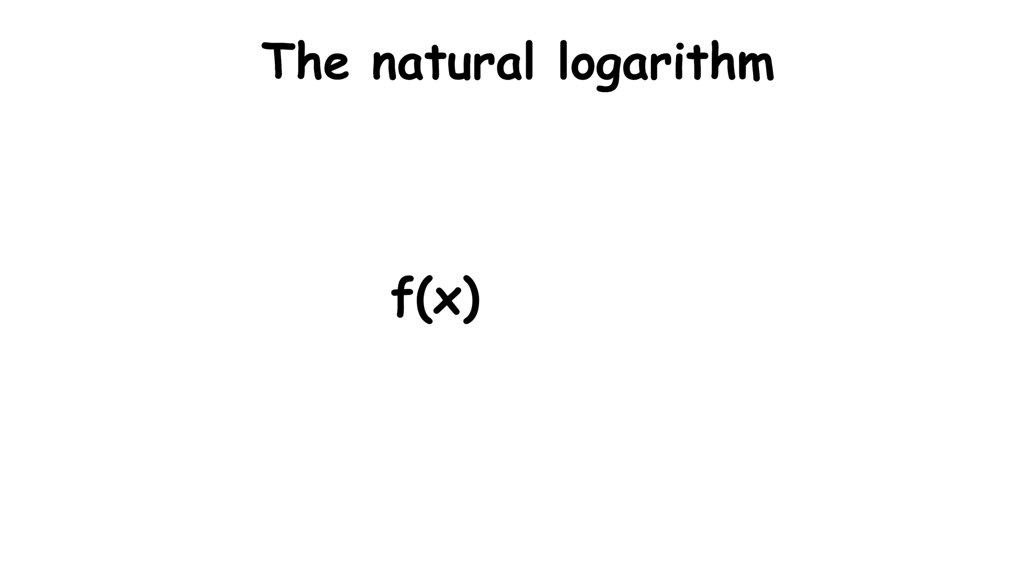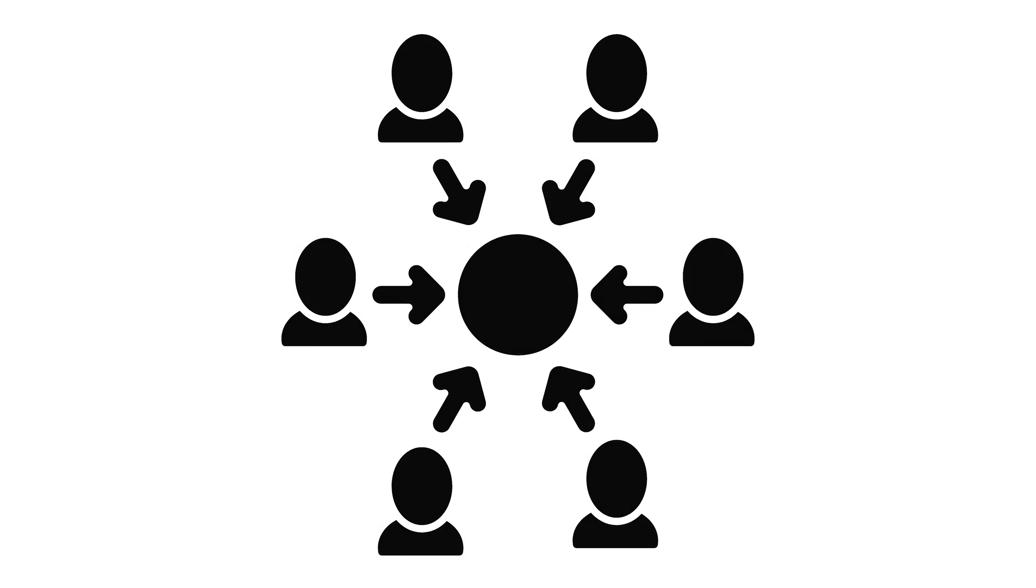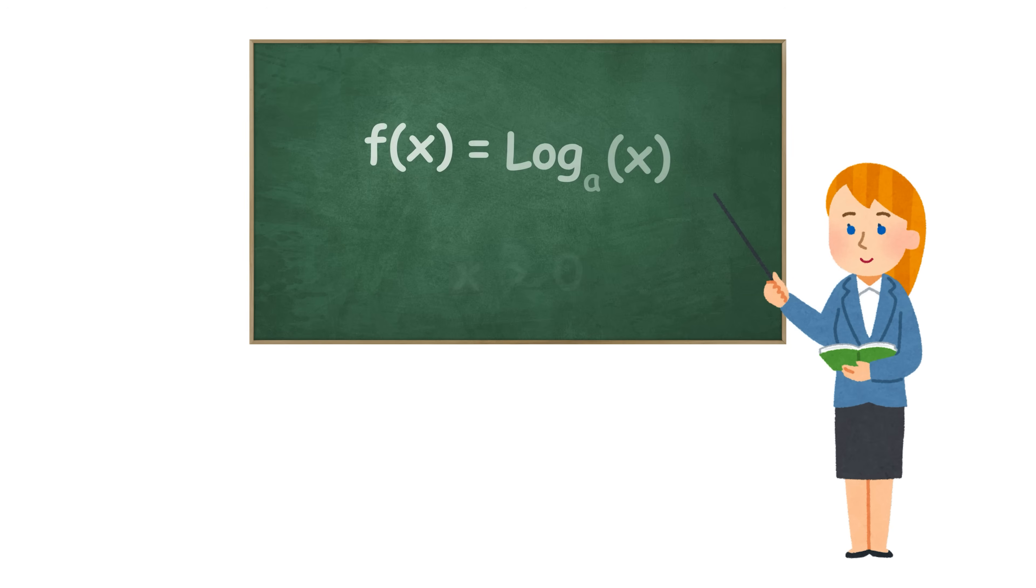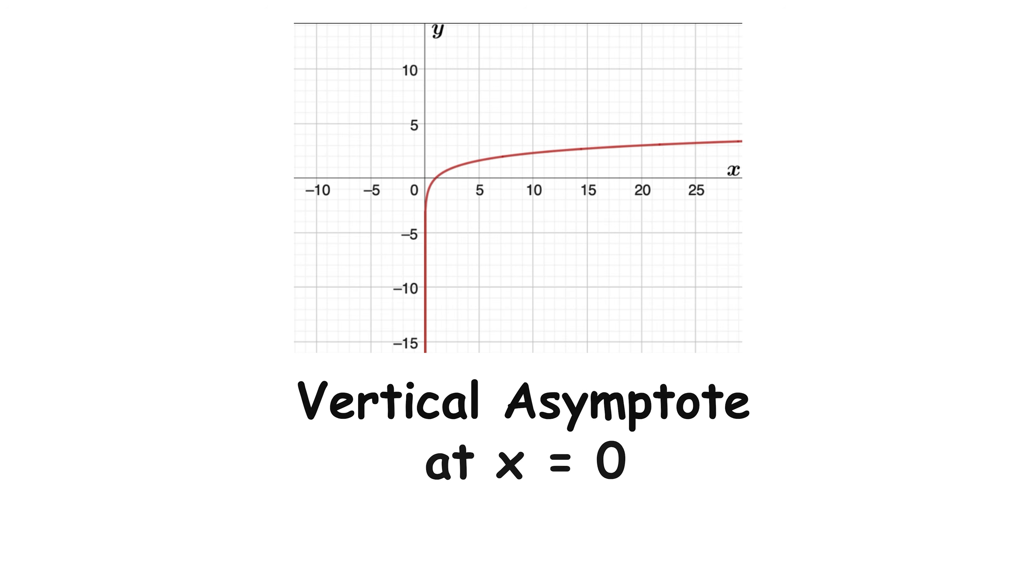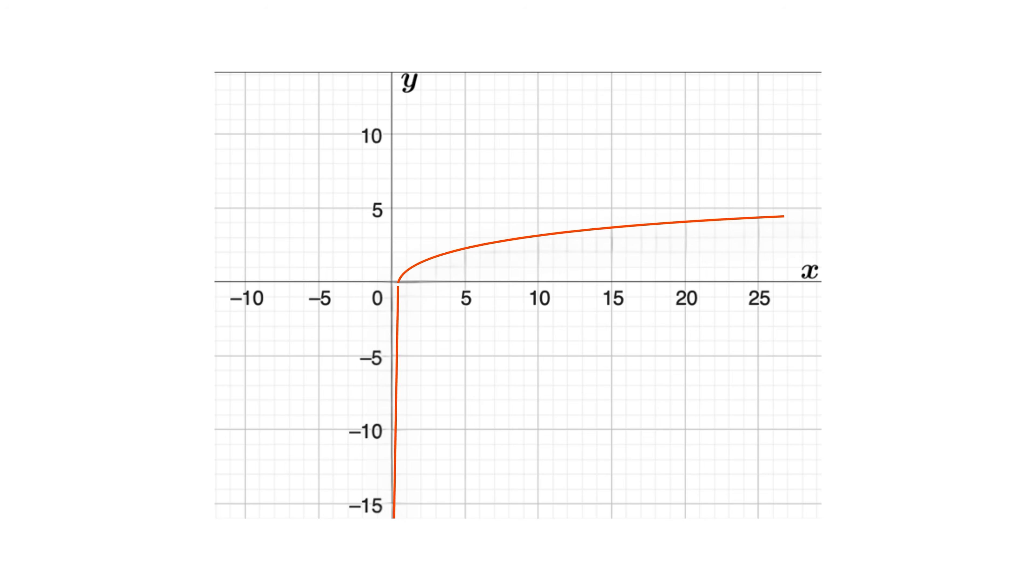The natural logarithm f of x equals natural log of the absolute value of x, with base e, is also common. These functions are only defined for x greater than 0. Their graph has a vertical asymptote at x equals 0, and grows slowly to the right.